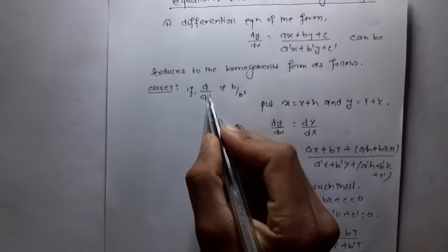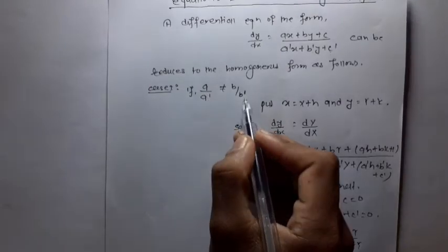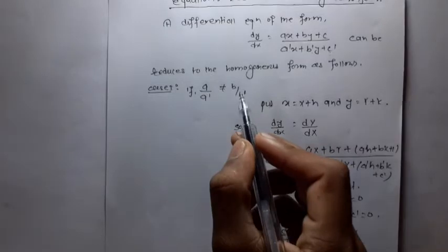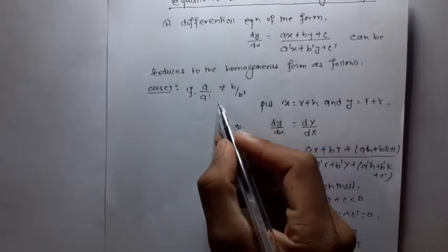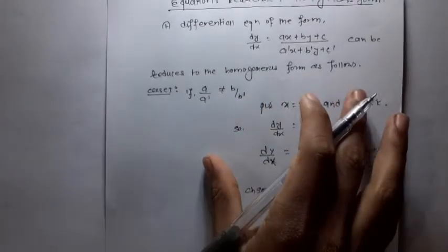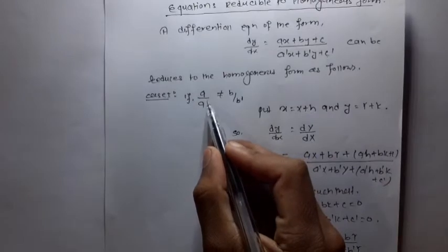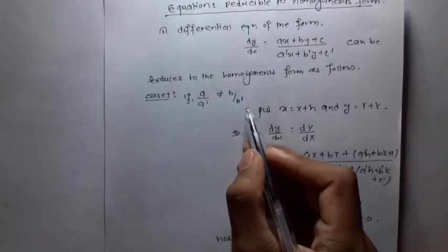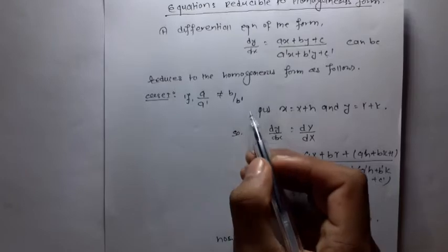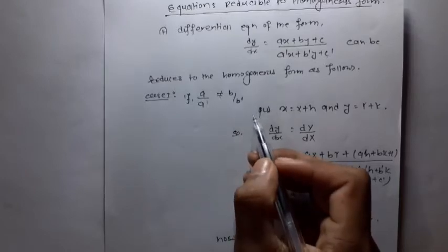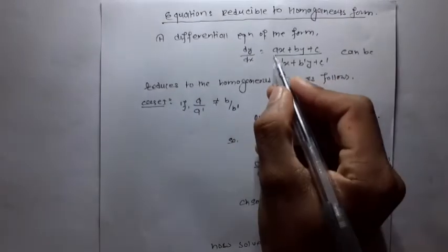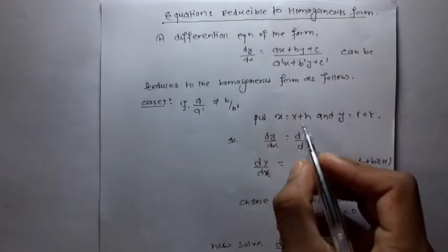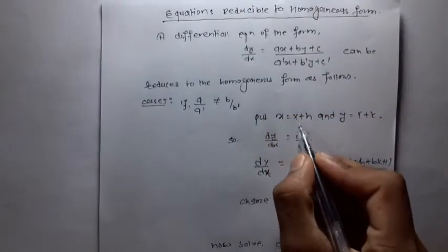Case one: a/a' is not equal to b/b'. Case two: a/a' is equal to b/b'. When the ratio a to a' does not equal the ratio b to b', we use a different approach. When a/a' equals b/b', we use a direct substitution. In Case 1, we put x = X + h and y = Y + k.